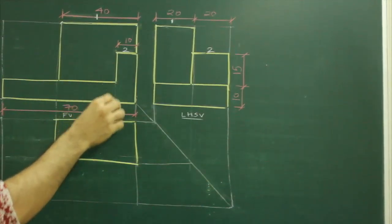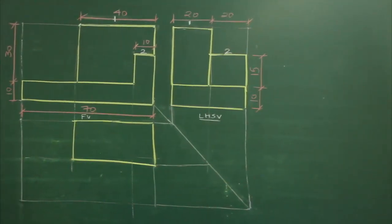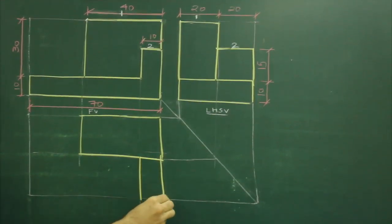So if we project this part and this part, whatever intersection we get, that is top view.